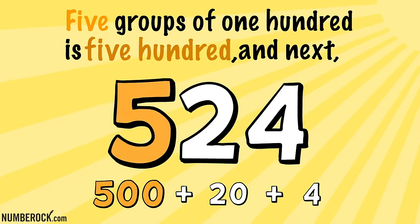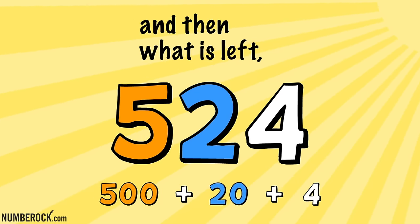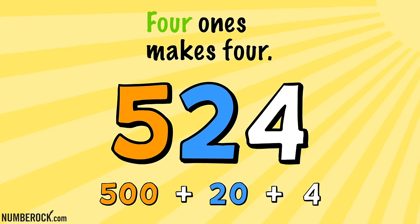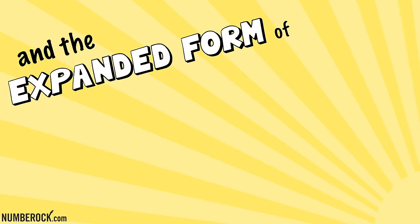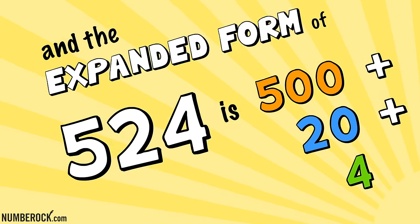Five groups of 100 is 500, and next, two groups of 10 equal 20, and then what is left? Four ones makes four, and the expanded form of 524 is 500 plus 20 plus 4.